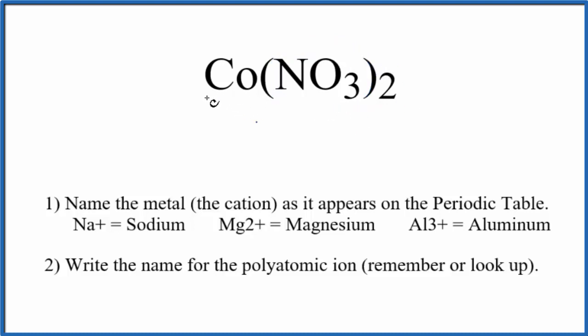We have Co, that's cobalt, and that's a transition metal. So we have a metal and we have these nonmetals. This is an ionic compound and we can use these rules here to write the name for Co(NO3)2.